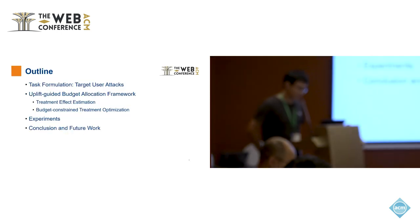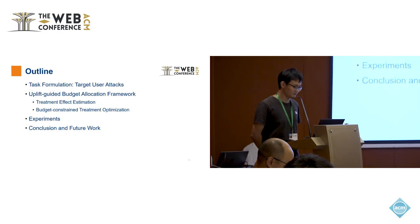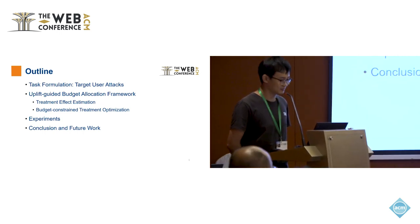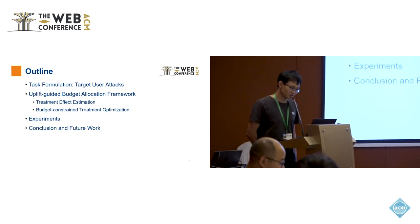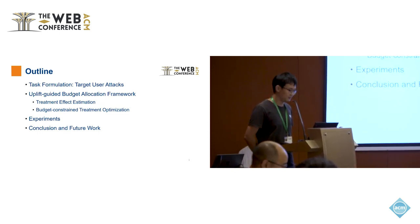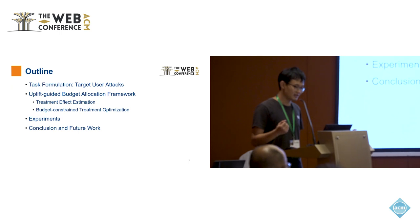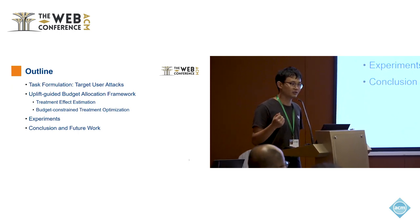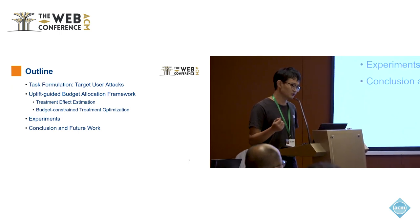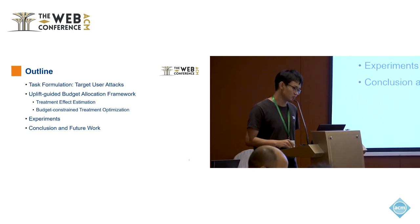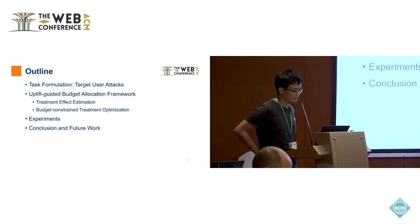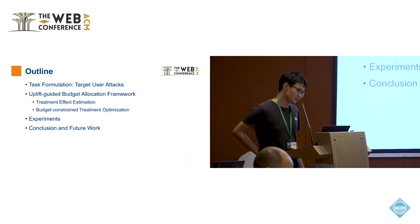I will briefly introduce this task, which is not familiar for most of us. It's about target user attacks on recommendation systems. I will introduce a framework for better budget allocation — how to assign fake users, or inject users, to different target users for attack. This will include two parts: treatment effect estimation and budget constraint treatment optimization, followed by some experiments and conclusions.